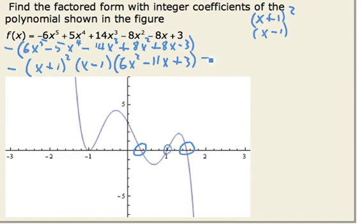Well now, the rest of the factorization is pretty straightforward. x plus 1, quantity squared, x minus 1, 3x minus 1, and 2x minus 3.